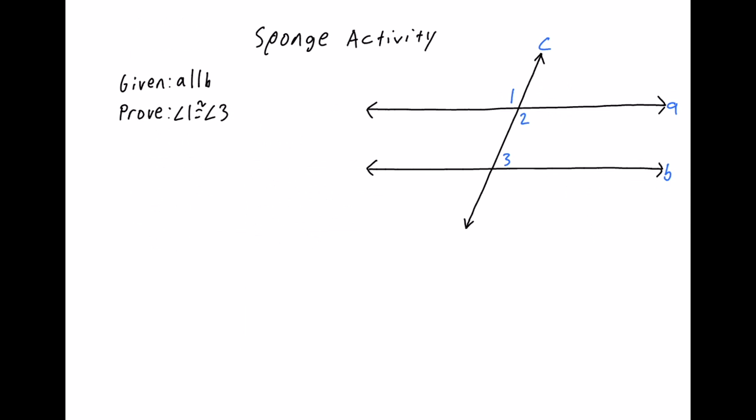Now time for the sponge. Given that line A is parallel to line B, prove that angle one is congruent to angle three. So write a two-column proof, write your statements, write your reasons, and end up proving that angle one is congruent to angle three. That's it for this video. Please make sure to take notes on the entire lesson, go back and rank yourself on how you do on the sponge — you need to attempt the sponge to get full credit. There are still some people who are not attempting the sponge; you need to do it or you won't get full credit.